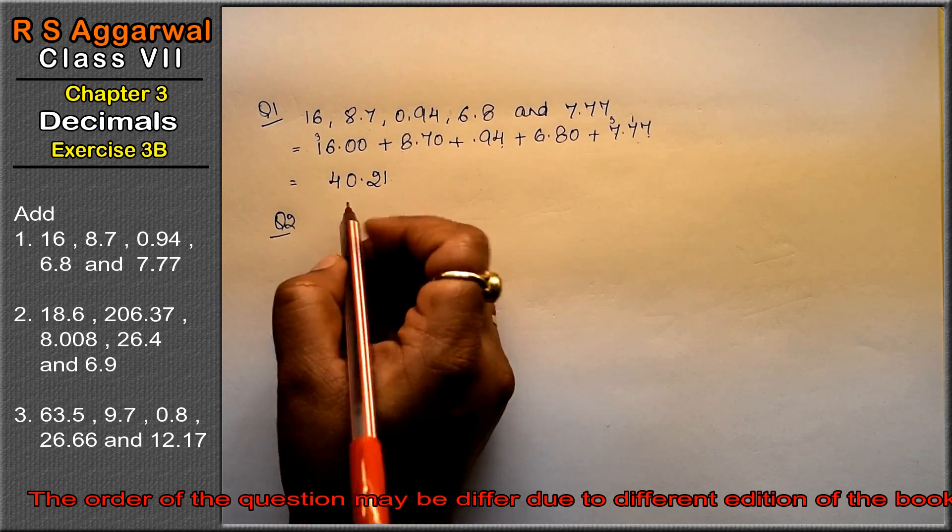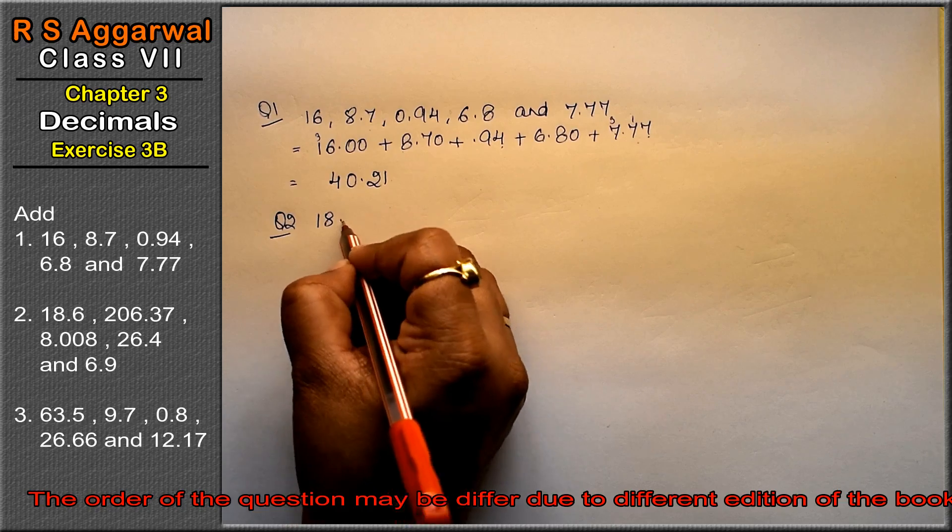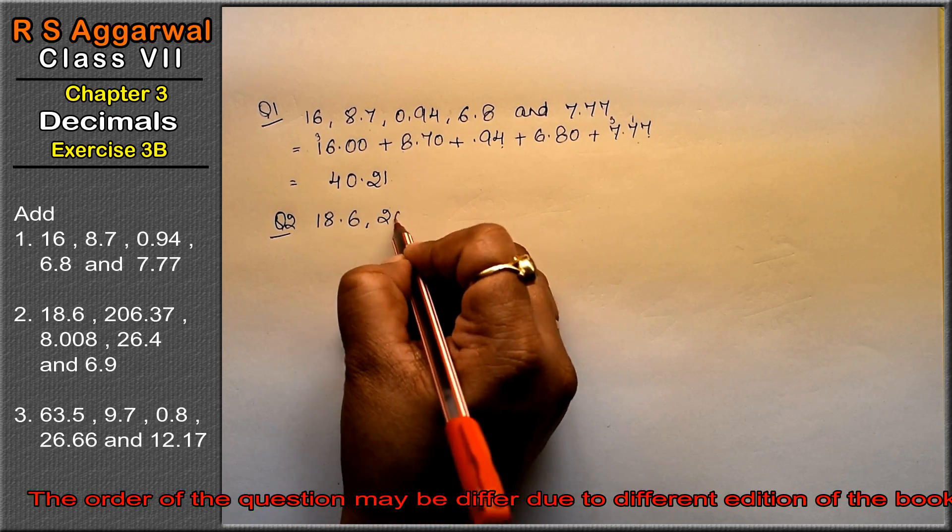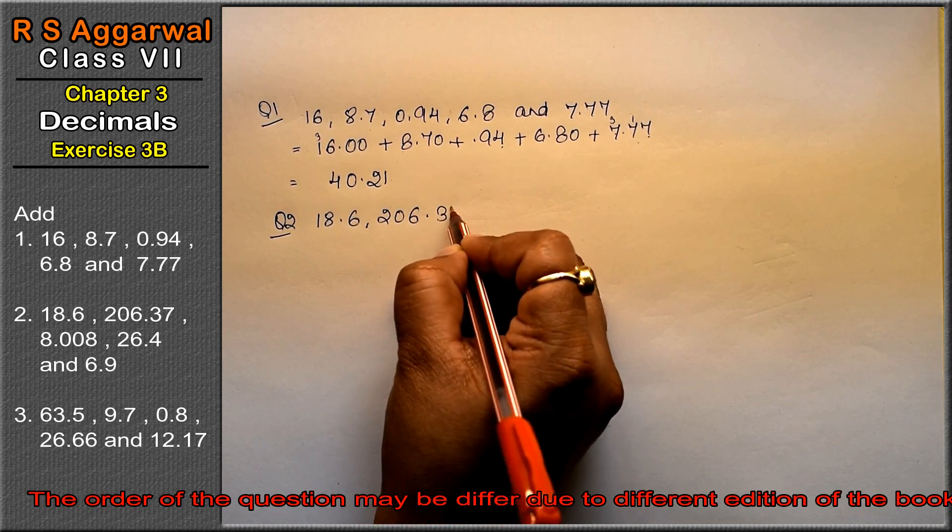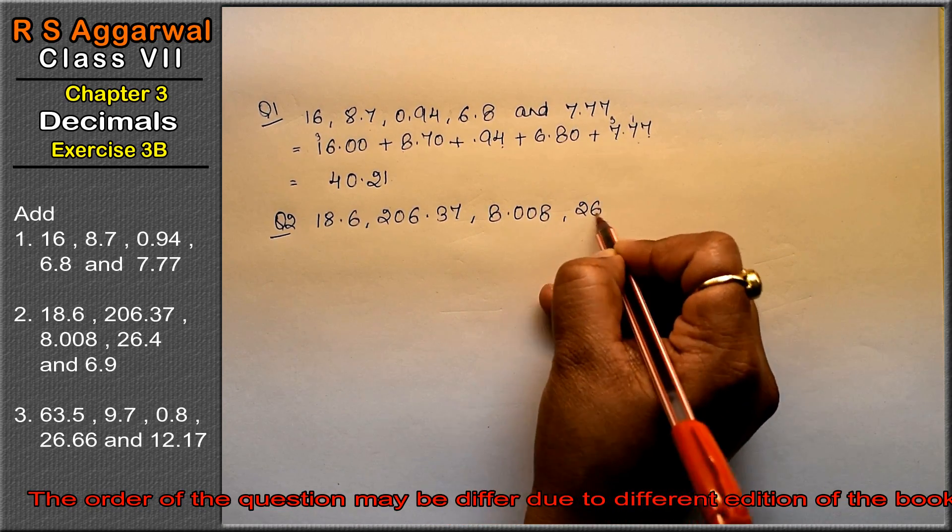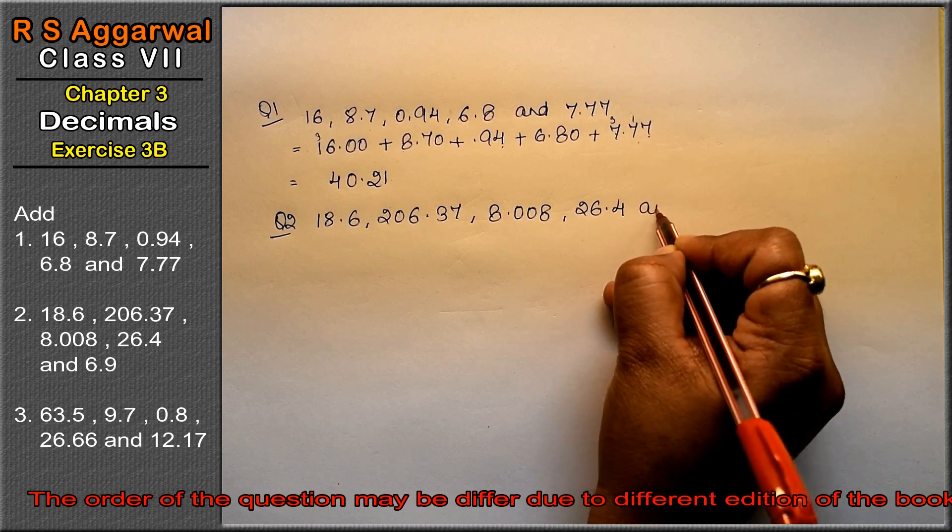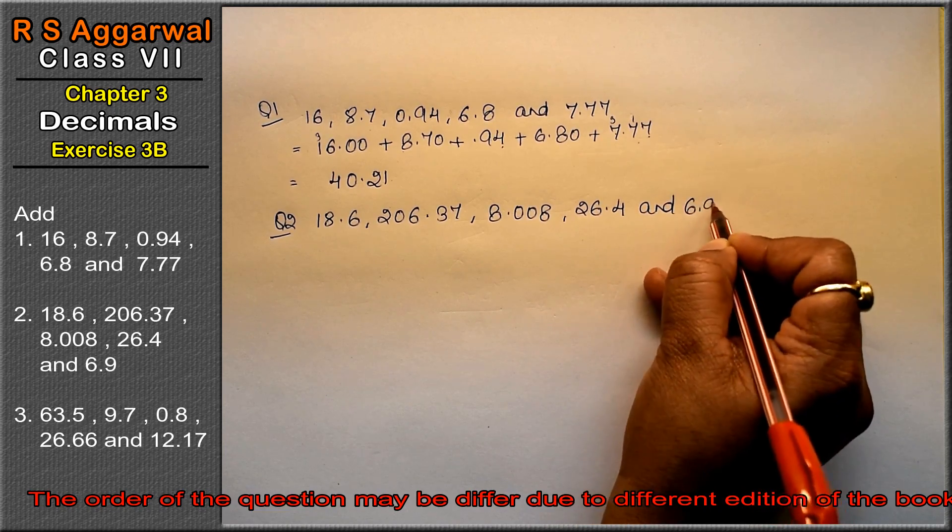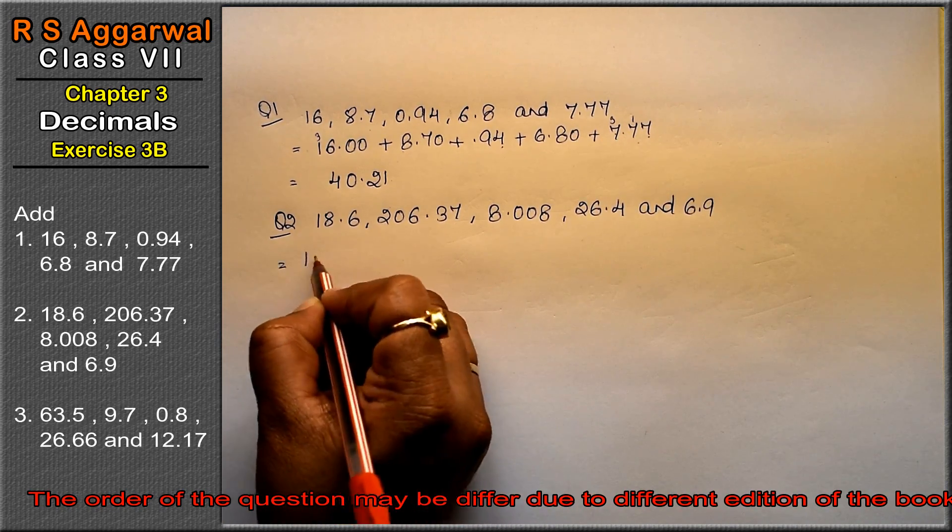Let's do question number 2. Question number 2 is 18.6, 206.37, 8.008, 26.4 and 6.9.